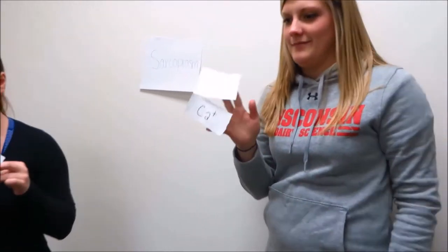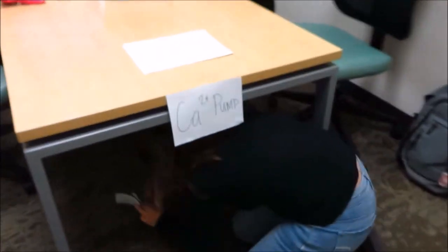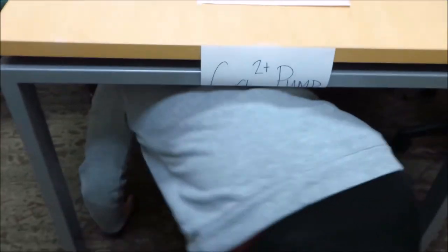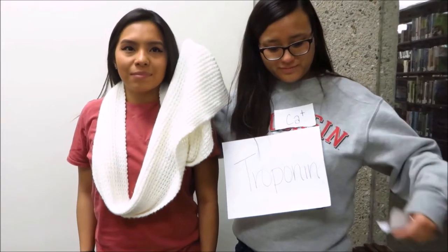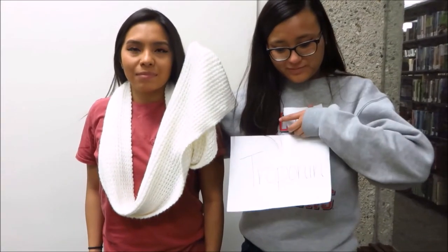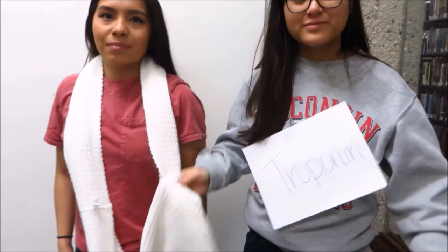When action potentials are no longer being received by the muscle cell, calcium ATPase pumps in the membrane of the sarcoplasmic reticulum begin to pump calcium out of the sarcoplasm. This also removes the calcium molecules that were attached to the troponin proteins during contraction. Troponin consequently returns to its original conformation, moving tropomyosin as well. Tropomyosin returns to the position in which it is covering all myosin binding sites, preventing further actin-myosin binding at the cross bridges.